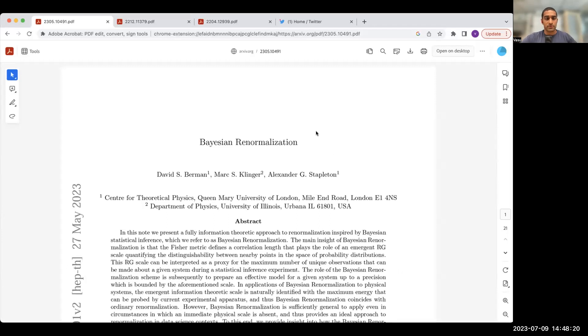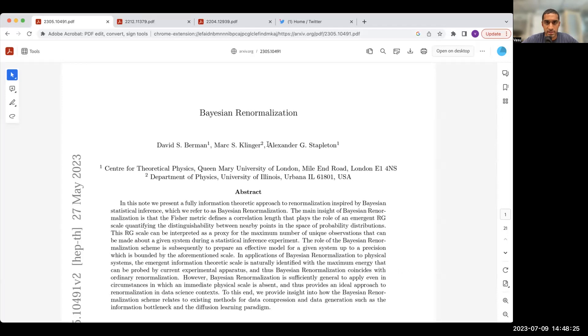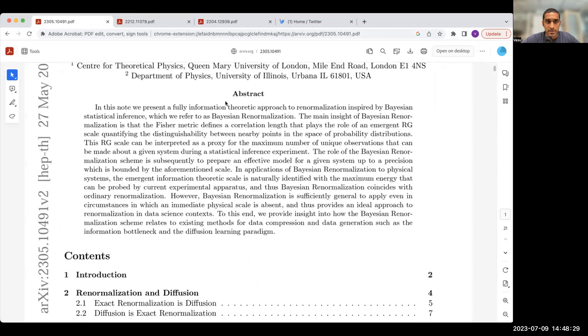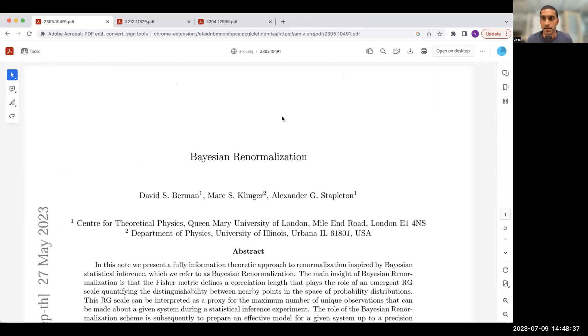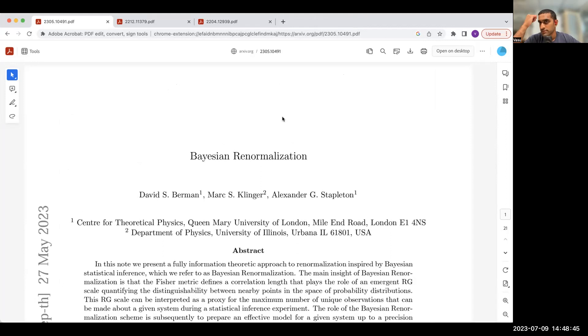Now I want to jump to a very nice paper, which is part of a series. I don't want to go too far down the list because I would like to have the authors, at least one of them, on as a guest. Here's one of the more recent ones from this year, titled Bayesian Renormalization by David Berman, Marc Linger, and Alexander Stapleton. This is a beat that these authors have been on, and they're connecting functional renormalization and dynamical Bayesian inference. I wanted to go over this because it gives us another way to think about functional renormalization in a different context.